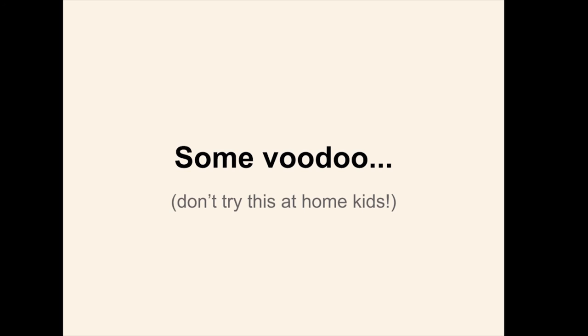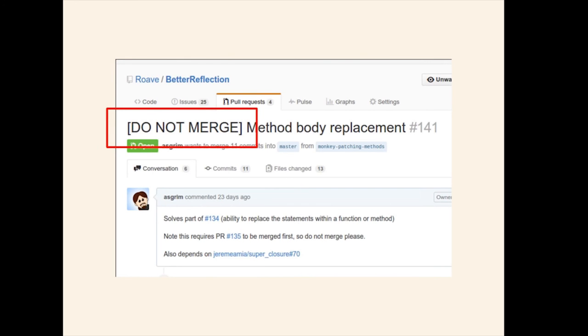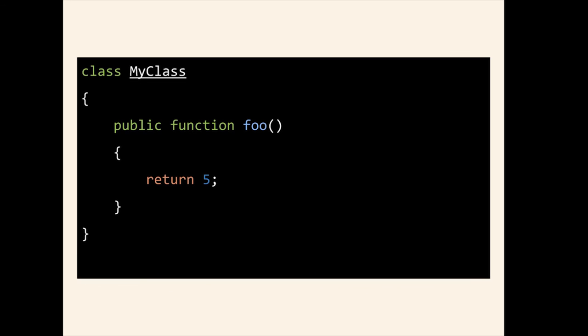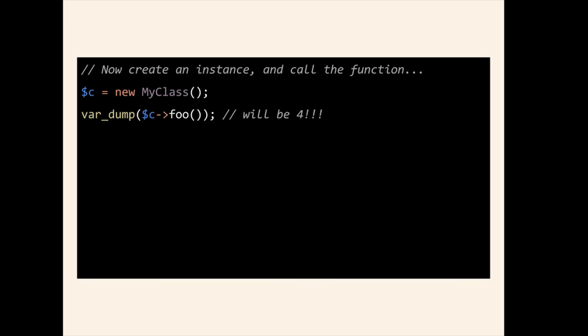And some very quick voodoo. This is actually a request that exists at the moment, but it says do not merge for a reason. But we can do some monkey patching. We've got a class — very simple, returns 5. We reflect on the class with Better Reflection, and note that you have to do this before it's loaded, because PHP can't unload classes at the moment. We grab the reflection method and override the body by giving it a lambda function. Then we do a bit of ugly looking code that basically saves it to a file, requires it once, and deletes the temporary file — not a great process, still working on that. But basically, when you run that and var_dump the result, it will be 4.